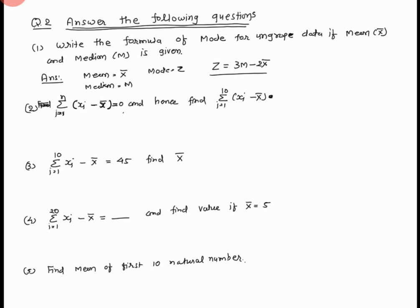Find the value: sigma i equal to 1 to 10, xi minus x-bar. We know that sigma i equal to 1 to n, (xi minus x-bar) equal to 0. Therefore, sigma i equal to 1 to 10, xi minus x-bar equal to 0.